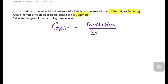We have to calculate how much was the actual correction done and how much was the remaining error in this control system. To identify that, we need to draw something called a homeostatic response curve.